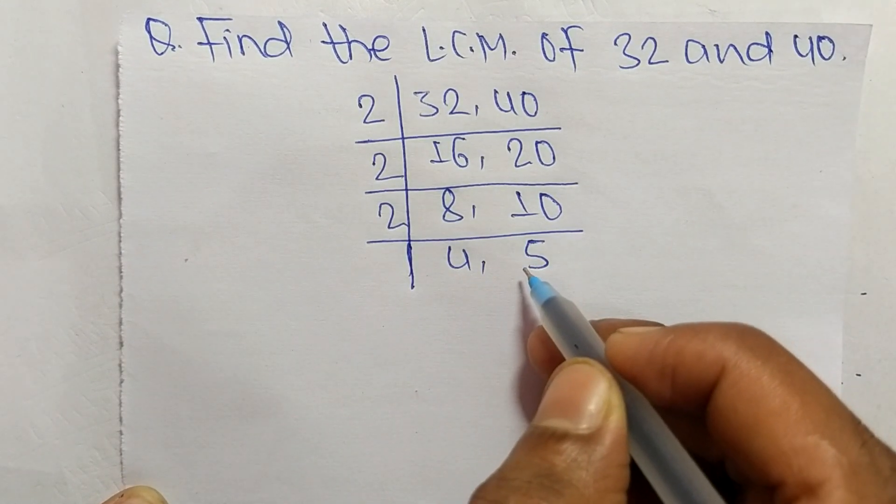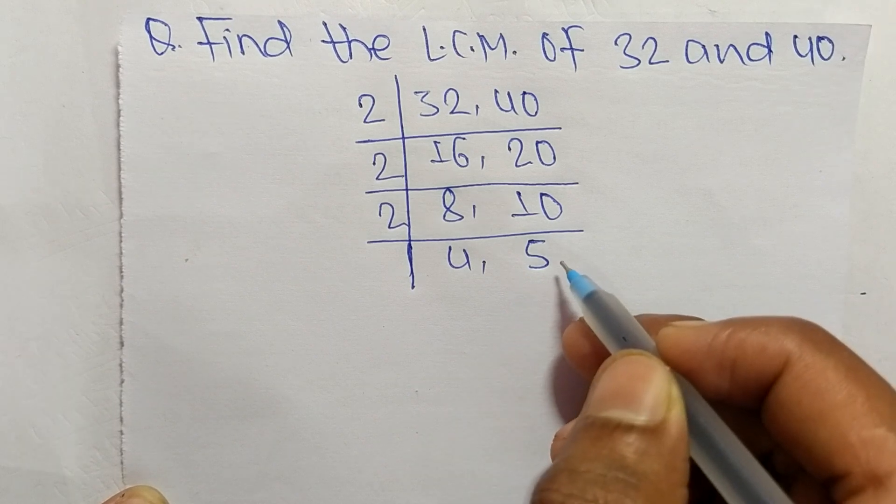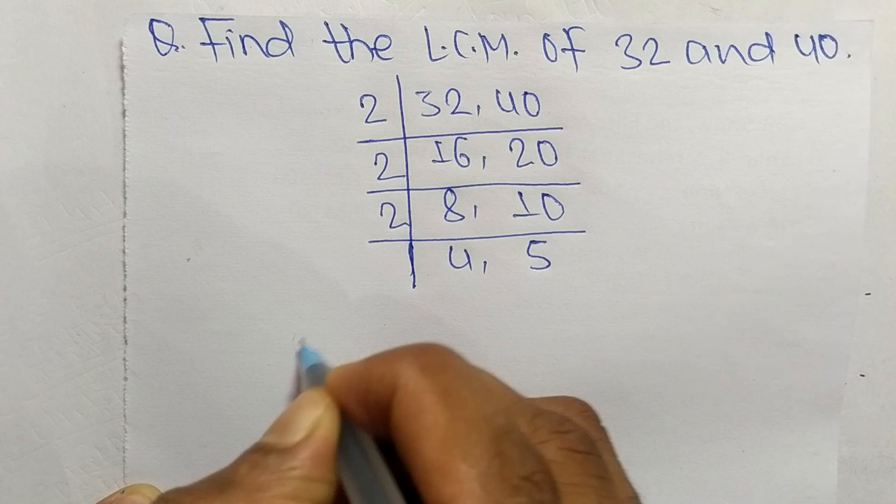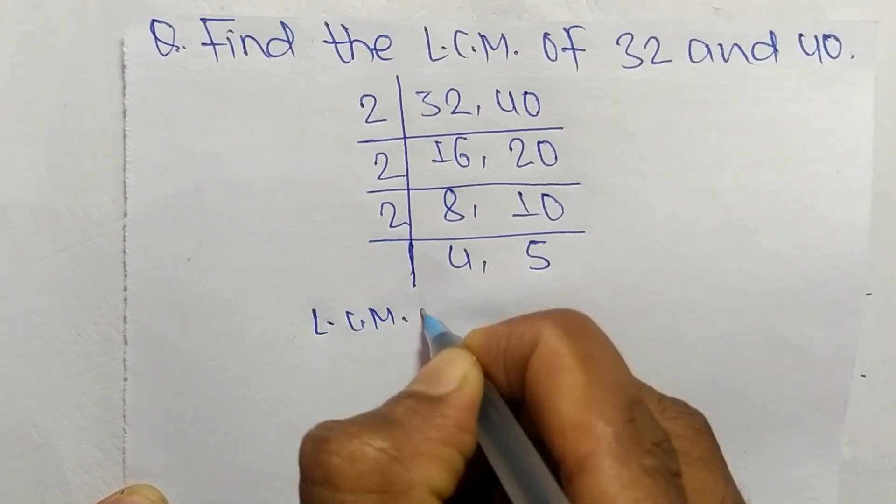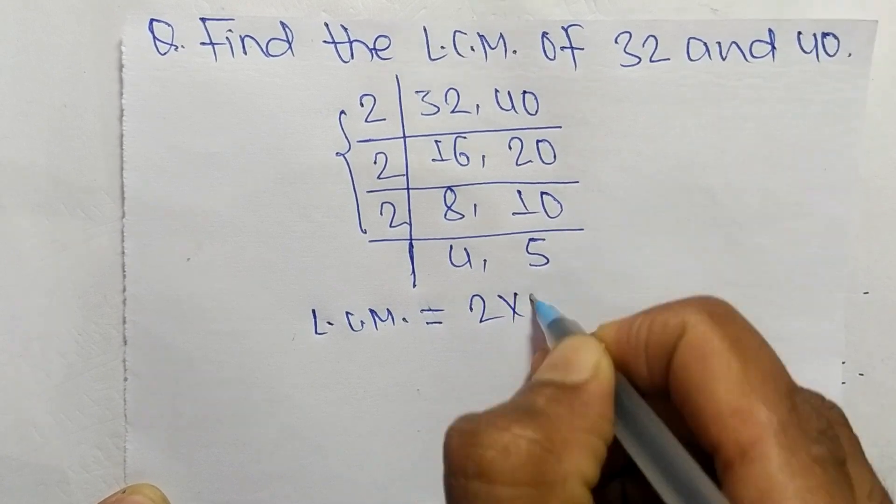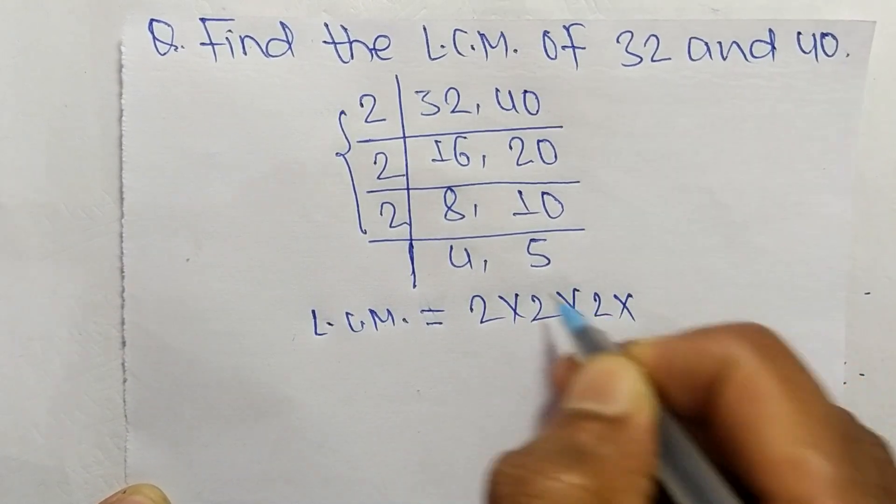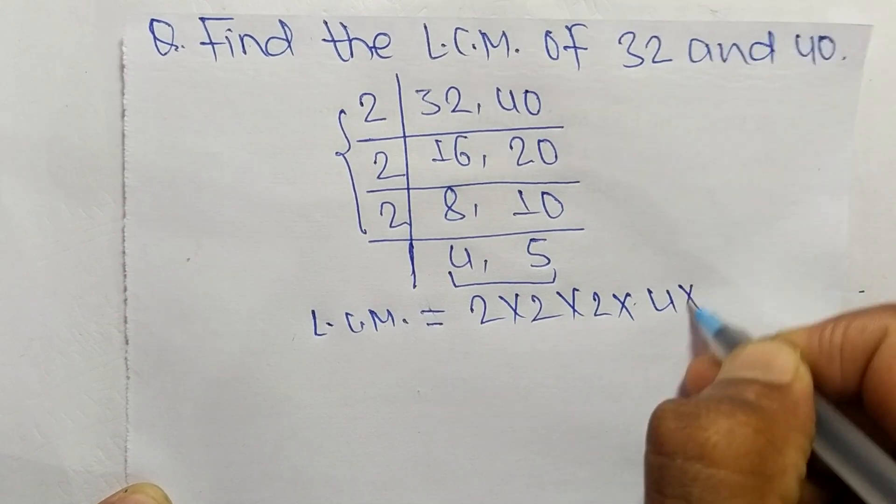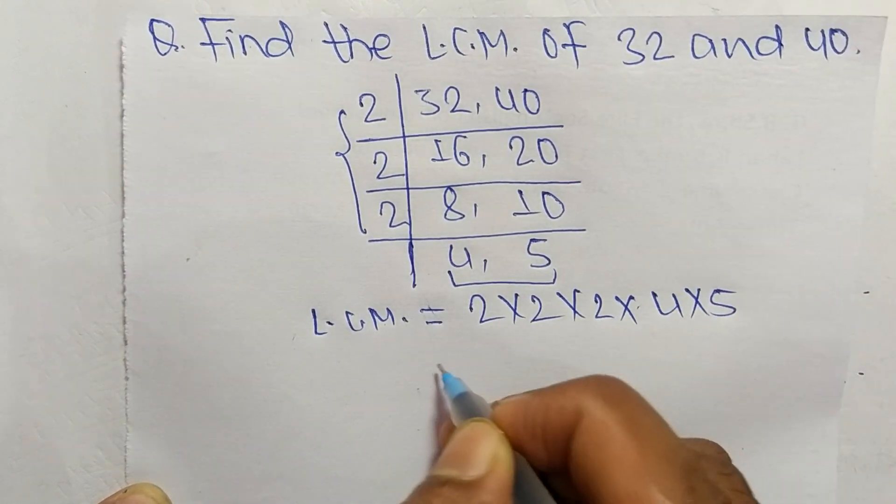So the LCM is equal to, from this part it is 2 times 2 times 2, and from this part it is 4 times 5. So it equals 2 times 2 equals 4, 4 times 2 equals 8.